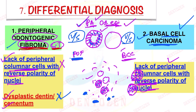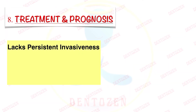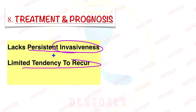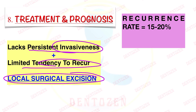Now talking about the treatment. Because of its different clinical behavior — it lacks persistent invasiveness and has limited tendency to recur as compared to solid ameloblastoma — local surgical excision can be done. Although local recurrences have been noted in 15–20% of cases, further local excision of the recurrent tumor will almost always result in cure. Follow-up is always a good choice.